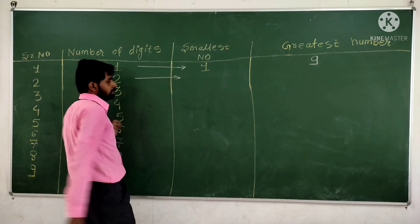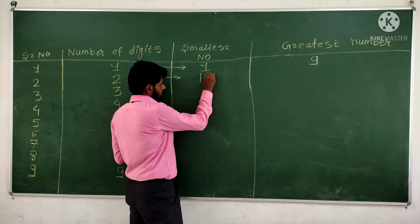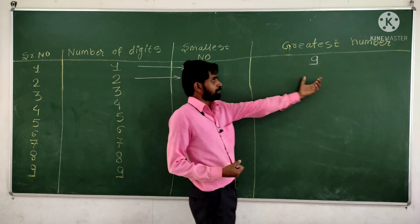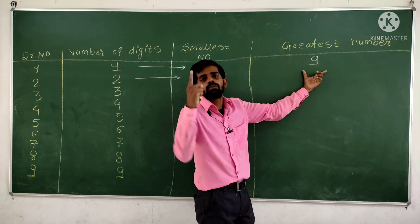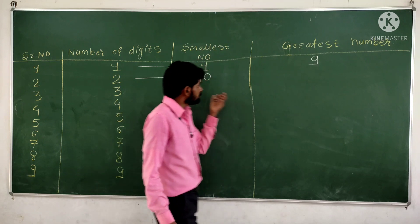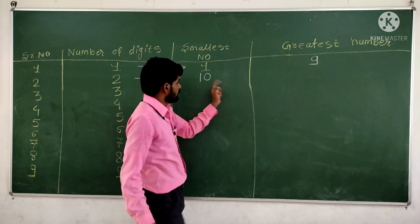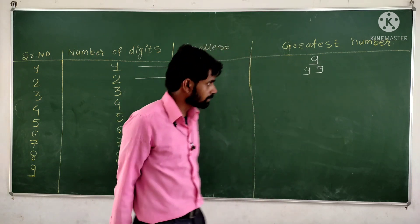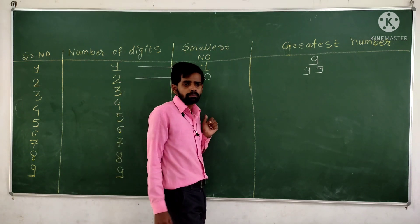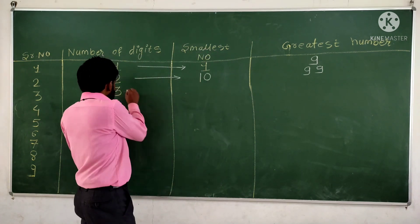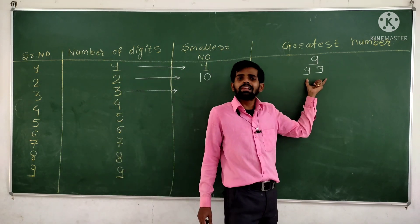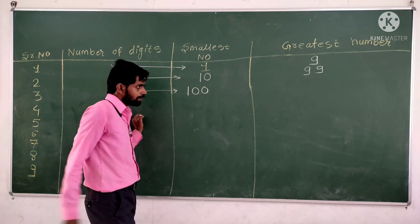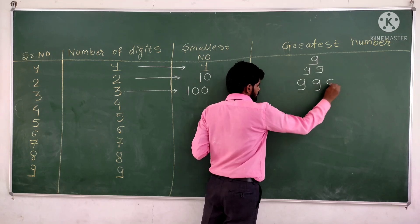The smallest two digit number is ten. To get the smallest two digit number, you add one to the greatest one digit number — nine plus one equals ten. The greatest two digit number is 99, because 100 is a three digit number. Similarly, the smallest three digit number is 100, which is one more than 99. And the greatest three digit number is 999.